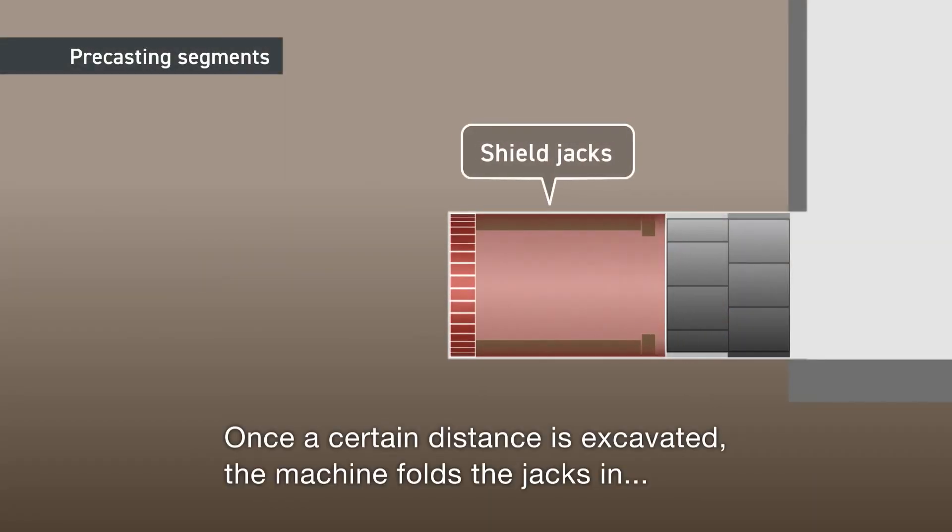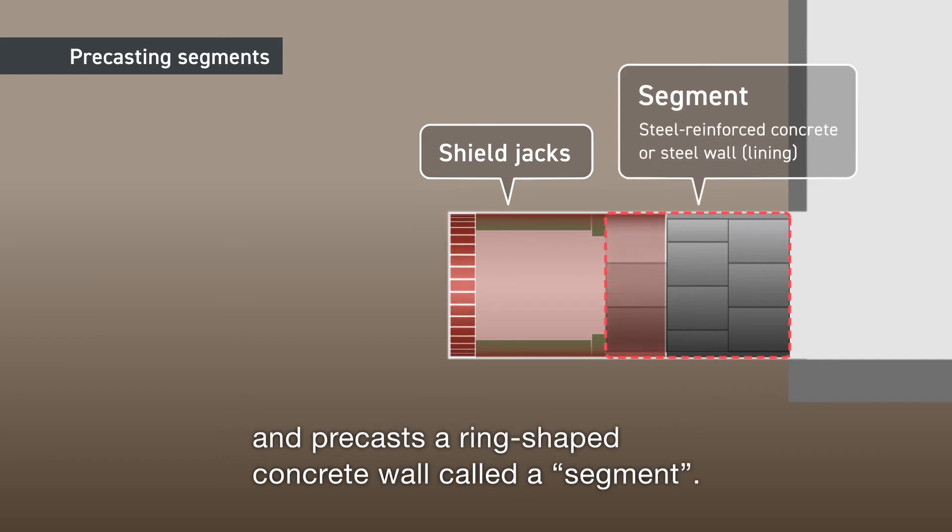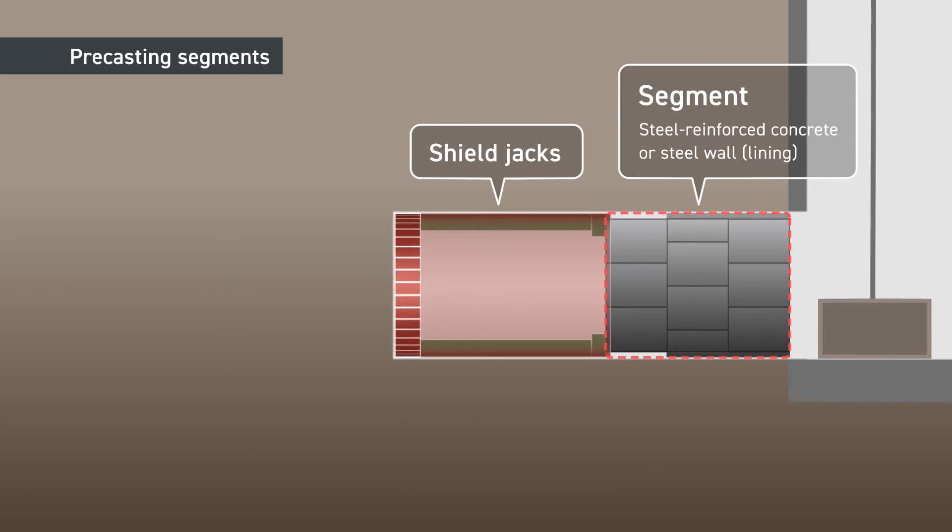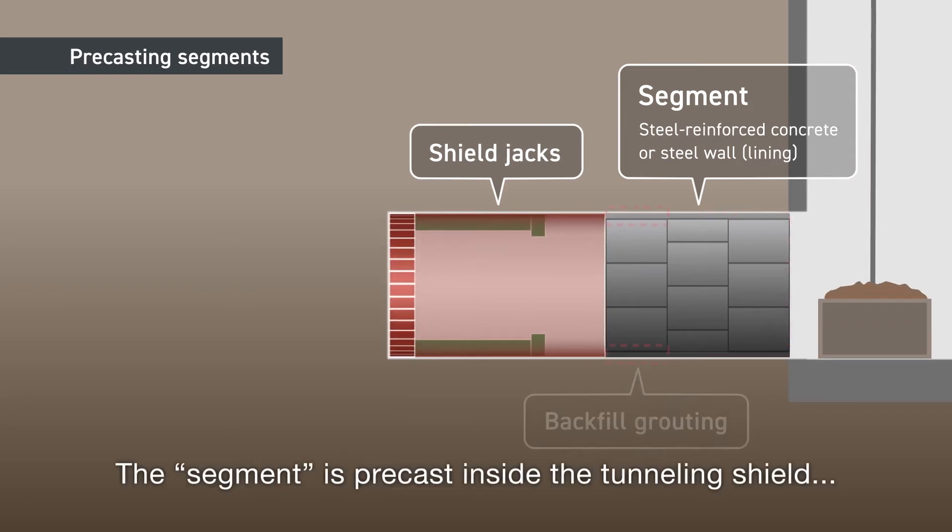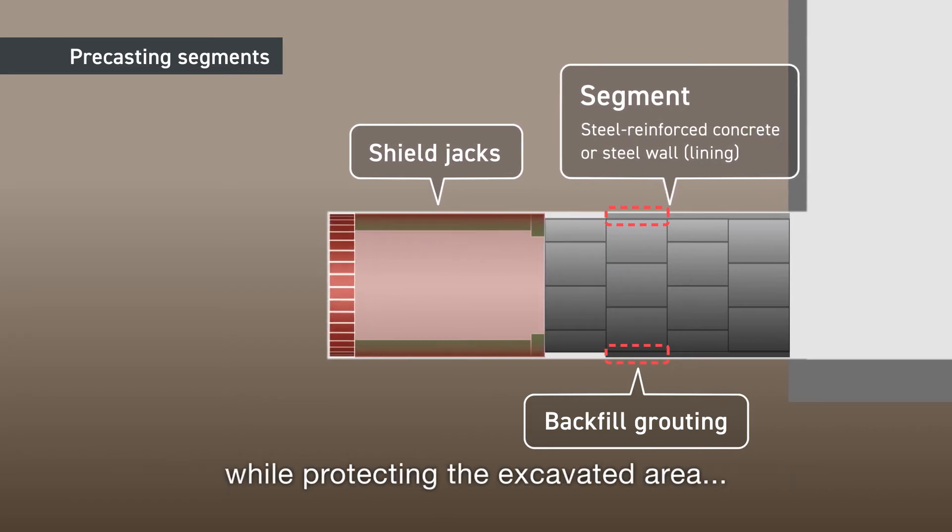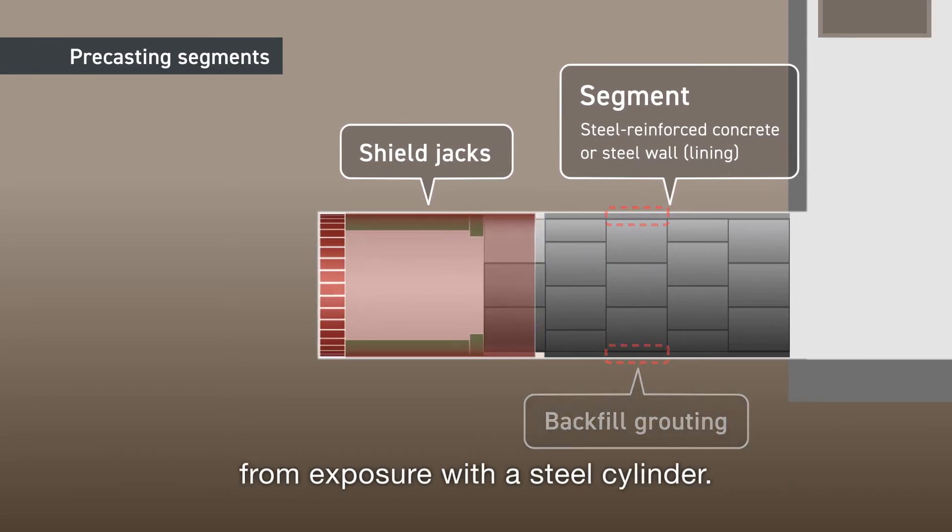Once a certain distance is excavated, the machine folds the jacks in and precasts a ring-shaped concrete wall called a segment. The segment is precast inside the tunneling shield while protecting the excavated area from exposure with a steel cylinder.